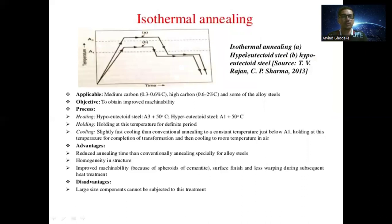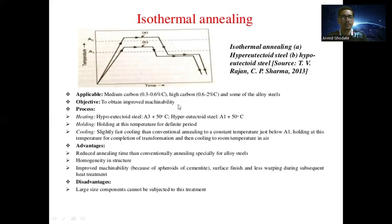Next is isothermal annealing, where the temperature remains constant for a particular period of time. The graph shows A1 and A3 temperatures on the y-axis and time on the x-axis. Isothermal annealing is applicable for medium carbon steel (0.3 to 0.6% carbon), high carbon steel (0.6 to 2% carbon), and some alloy steels. Its objective is to obtain improved machinability.